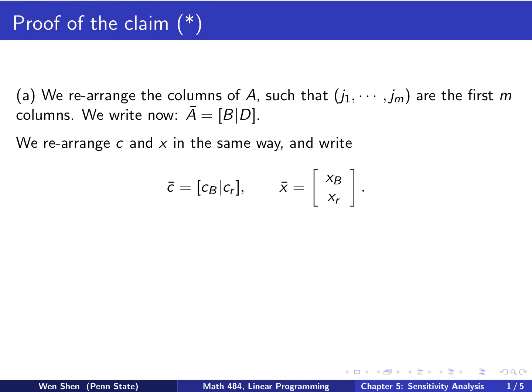Now we rearrange the c vector in the same way, such that we call the arranged one c-bar. It contains a vector of length m, a row vector, and the remaining part. That's cB and cr. Then we arrange the x vector in the same way. This is length m, that's xB, and the remaining xr.